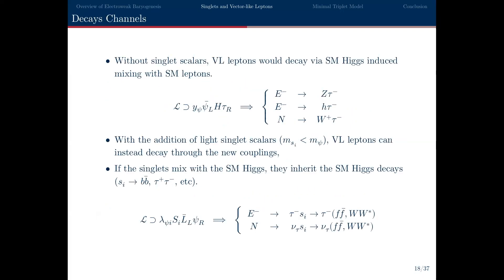In a minimal vector-like lepton model, the vector-like leptons decay via their mixing with standard model leptons induced by coupling to the Higgs — heavy charged leptons decay into a Z or Higgs plus a third-generation standard model lepton (tau), and the neutral one decays into W plus tau. However, when the singlet scalars are less massive than the vector-like leptons, the decay chains include these singlet scalars. If the singlets mix with the standard model Higgs, they inherit decays similar to a light Higgs boson, giving signals like tau plus S, where S decays into fermion pairs or WW*.